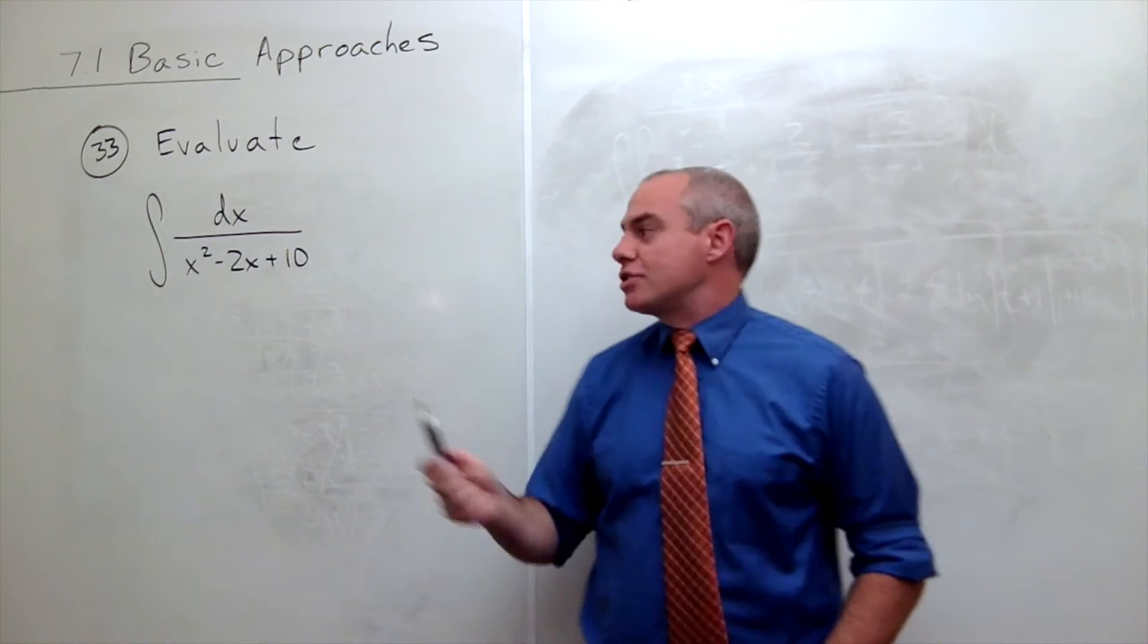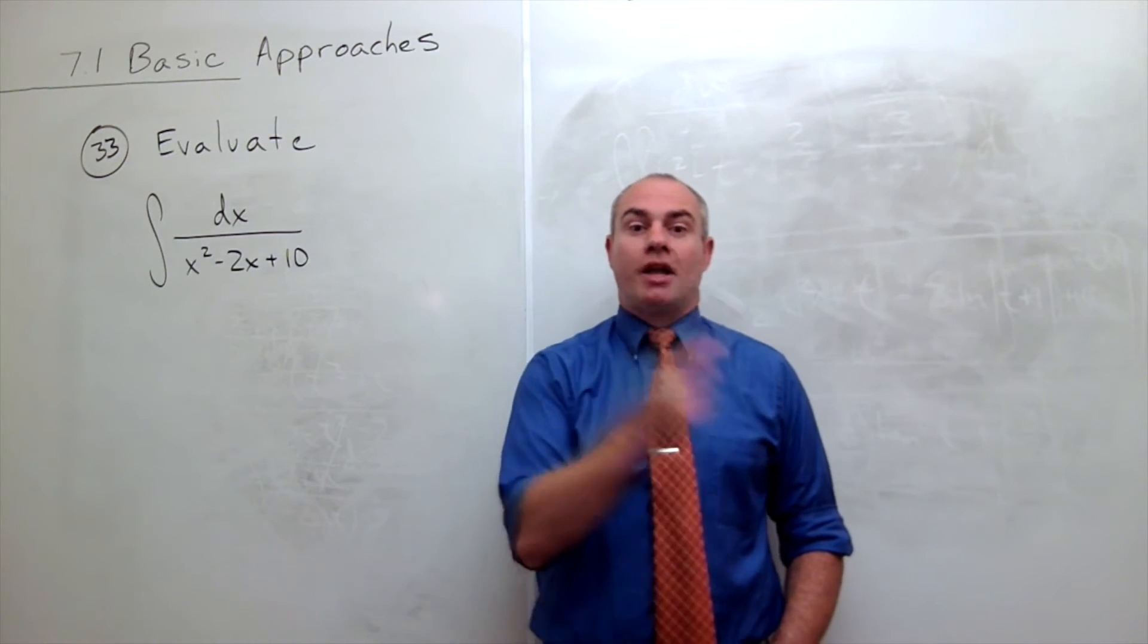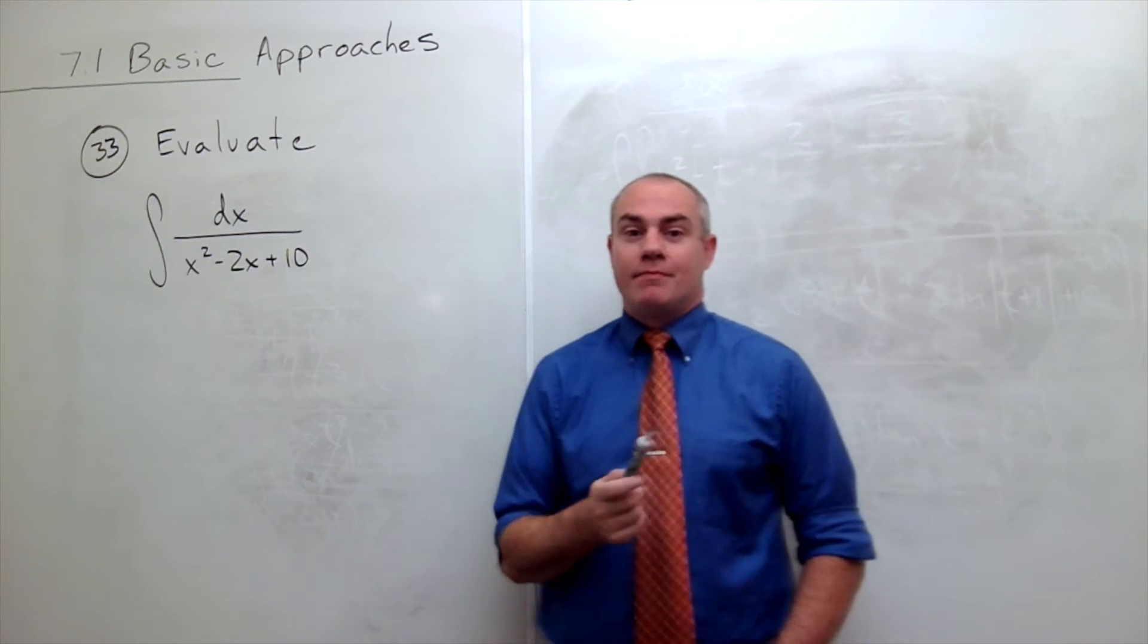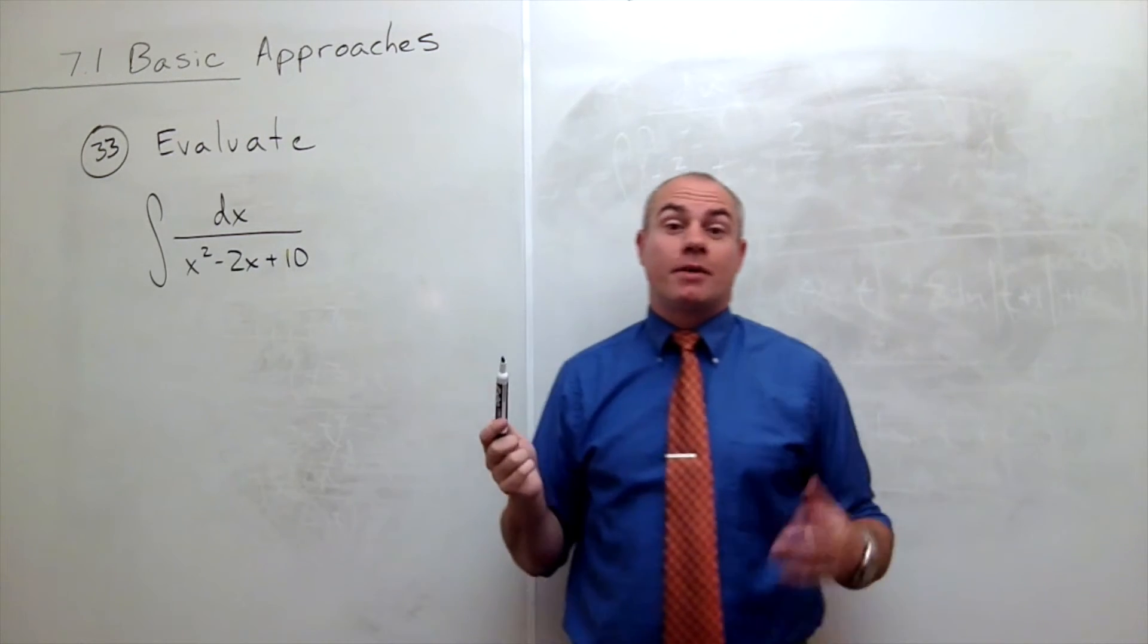So what I want to do is just break this 10 up. I could write 10 as 1 plus 9, because I want the 1 to combine with these two terms to complete the square.